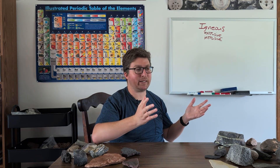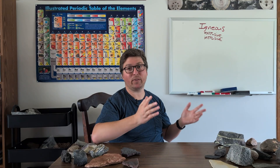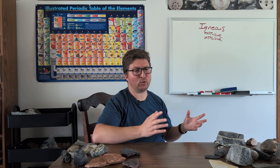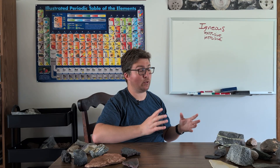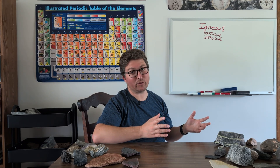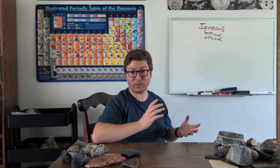Pegmatites can have crystals the size of your hand. Those can take tens of thousands, even hundreds of thousands of years to cool in these massive magma bodies that cool very slowly underground. So if you get a massive plume of magma a couple of miles wide, it's going to take a long time to cool underground, giving you a lot of time to grow some big chunky crystals.